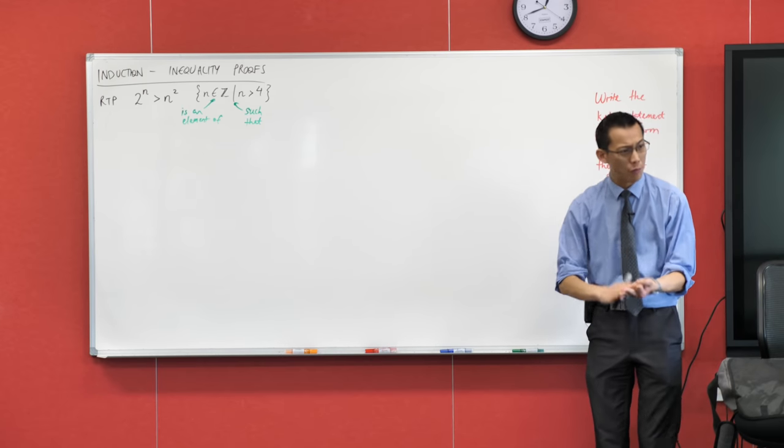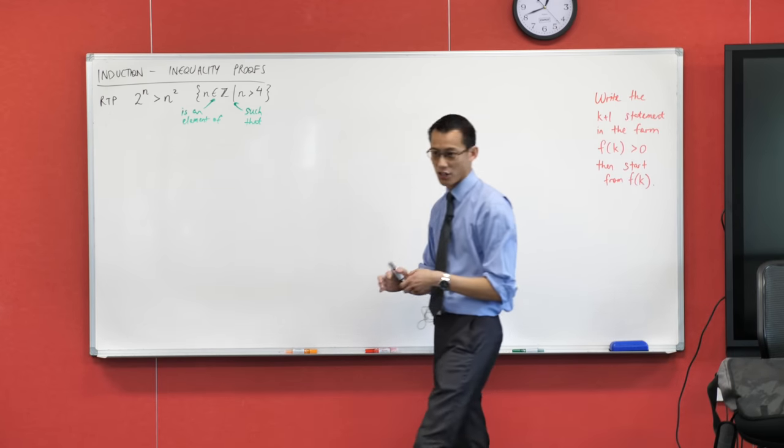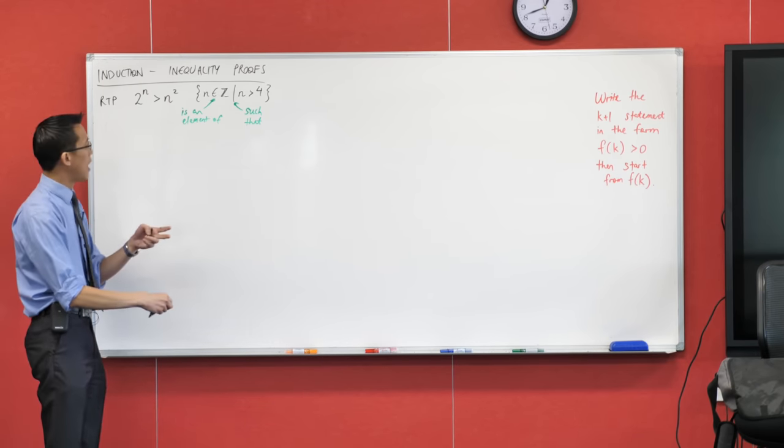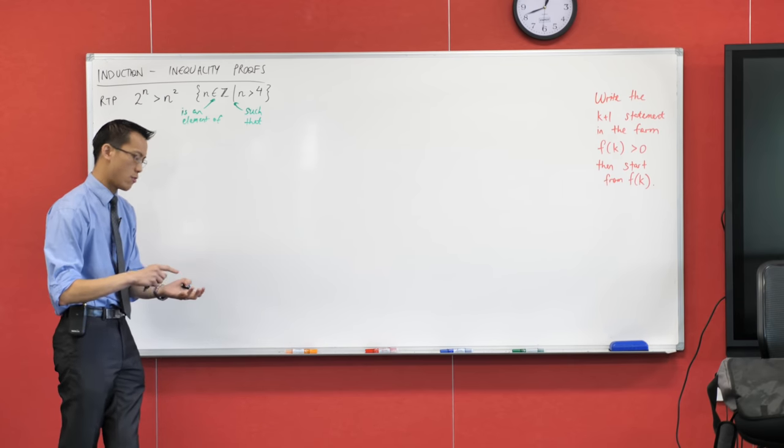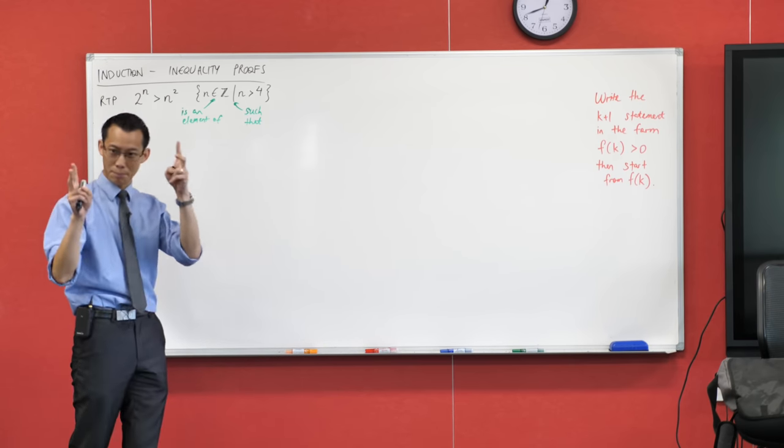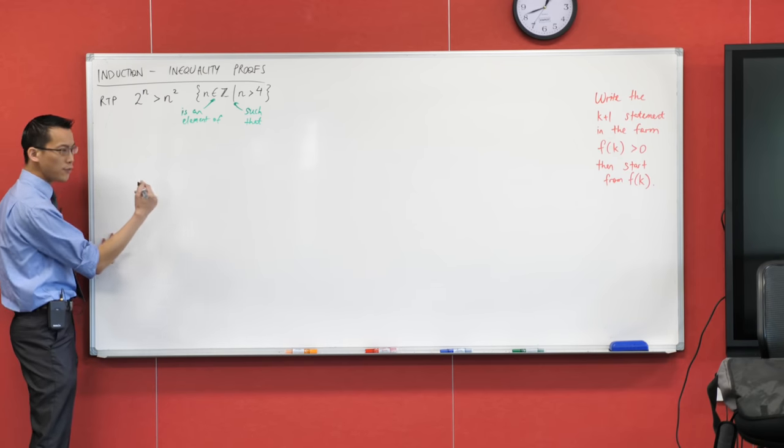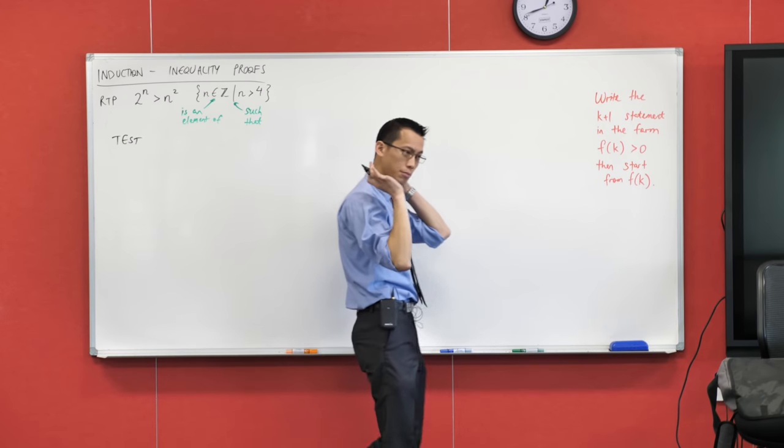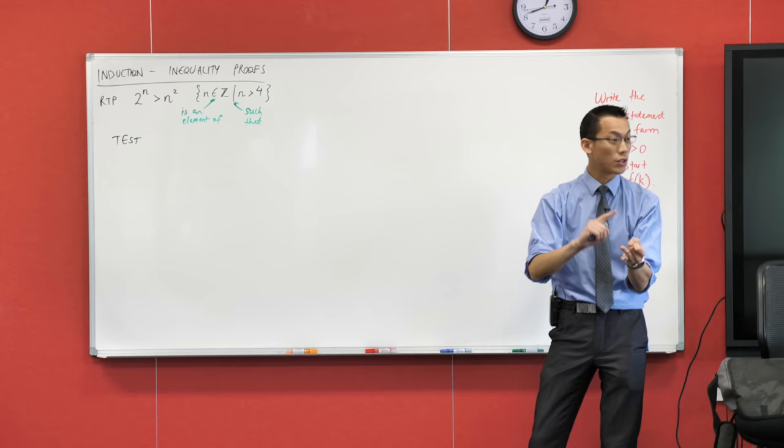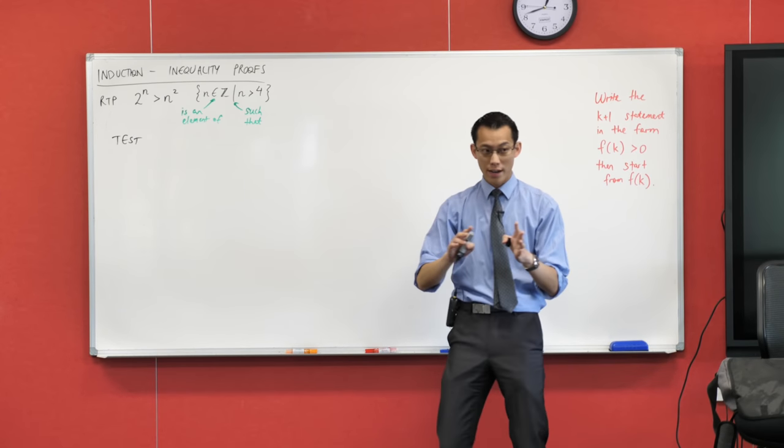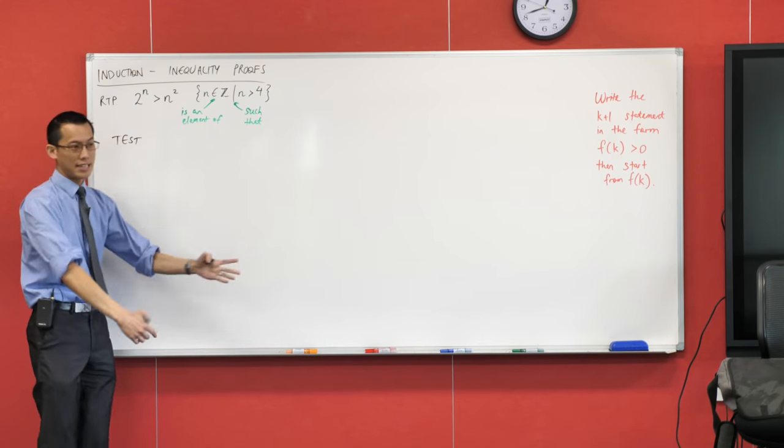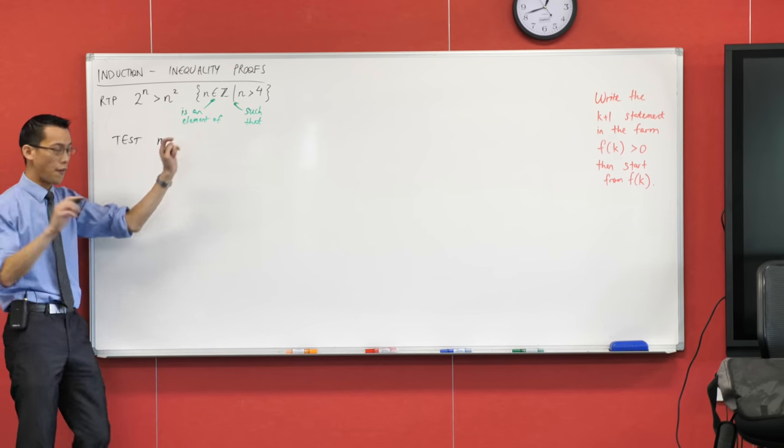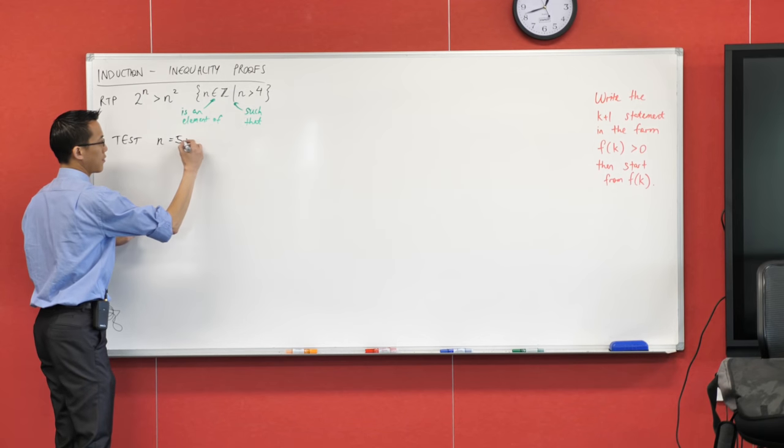So what we're going to do is work through our normal three steps when it comes to every induction proof. We're going to test the base case, we're going to assume that this thing is true for some arbitrary value, then we're going to do the main part of the work, which is the proof step. Okay, so let's make sure we start at the top because even from step one, there are a few differences between this kind of induction proof and your series or sequences or your divisibility proofs. Okay, so for starters, have a look. n is greater than 4 but n is an integer, so my base case is not going to be 4, it's going to be 5. So I'm going to test for n equals 5.